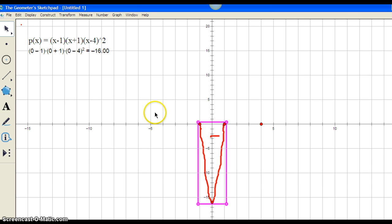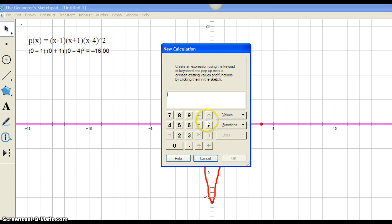So now let's see what happens to the left of negative 1. So let's pick a value, say negative 5, and substitute it into p of x. So we go to number again, calculate. I can use these brackets here and these numbers. Negative 5 subtract 1 times negative 5 plus 1 times negative 5 subtract 4 quantity squared equals.